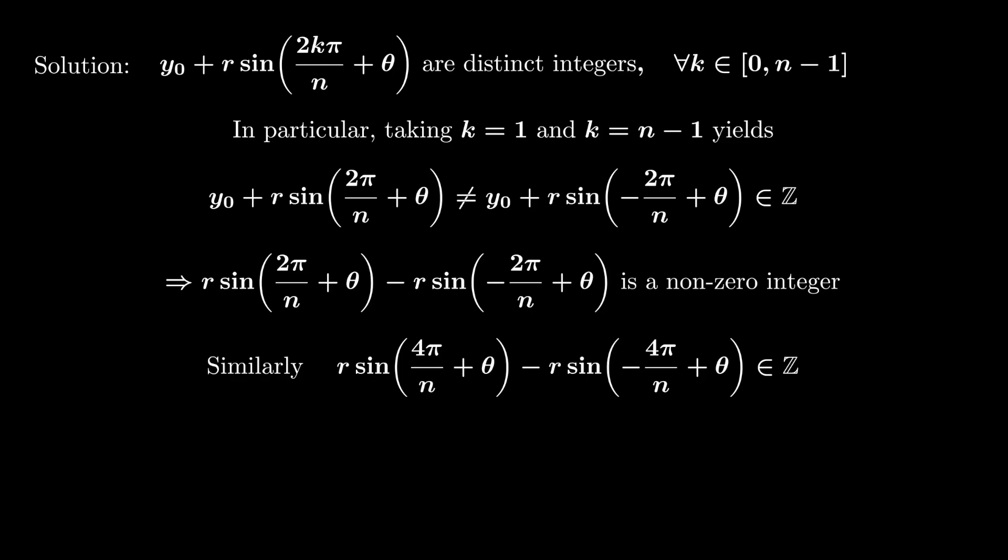Now we could do the same thing with the point k equals 2 and the point k equals n minus 2. And this implies that r sin(4π/n + θ) - r sin(-4π/n + θ) is an integer. Now taking the ratio between these two quantities removes the scaling parameter r.